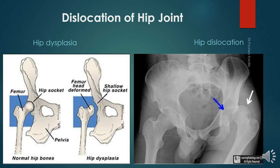Anterior dislocation may result from violent injury that forces the hip into extension, abduction and lateral rotation. In this condition the femoral head is inferior to the acetabulum and it may occur with fracture. When the femoral head is dislocated it usually carries the acetabular bone fragment or acetabular labrum along with it.